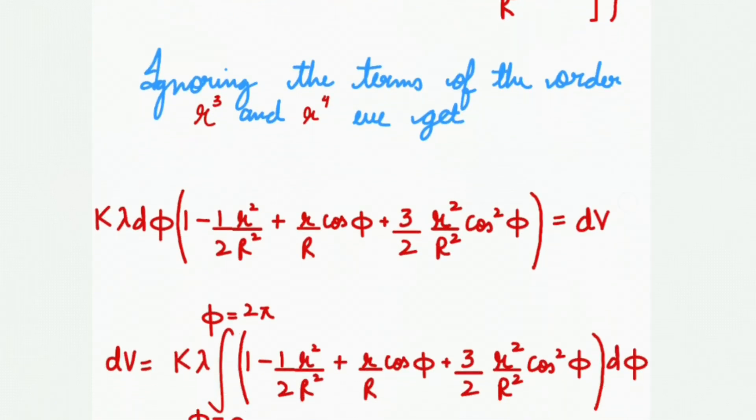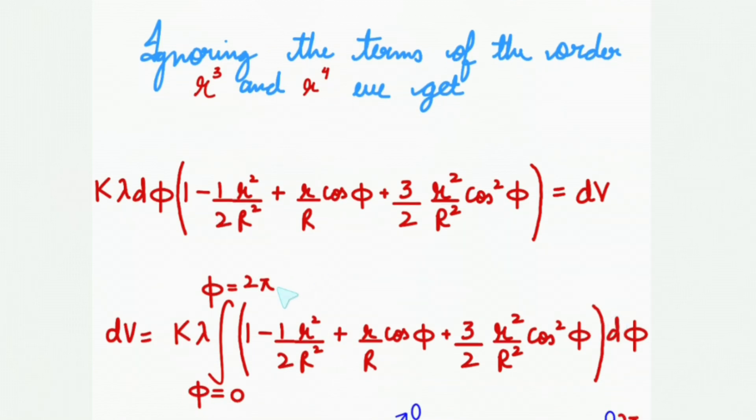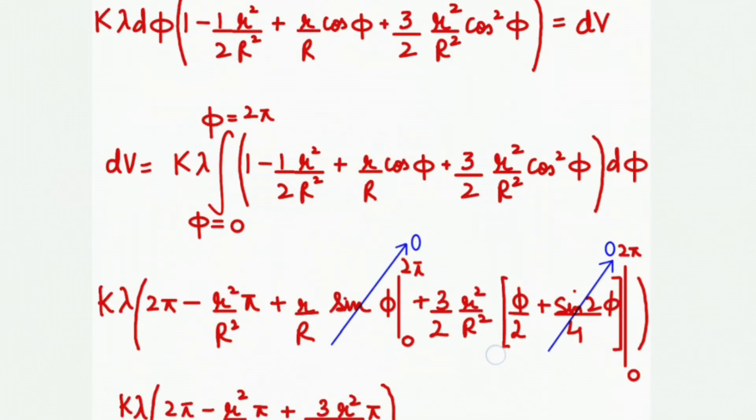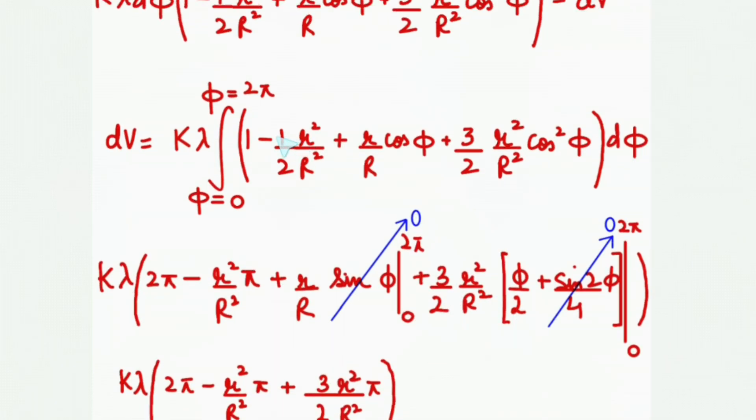Now we'll integrate this expression with respect to phi because small r is constant. The limits of phi will be from zero to two pi. Also when we put the limits, we'll get two pi.